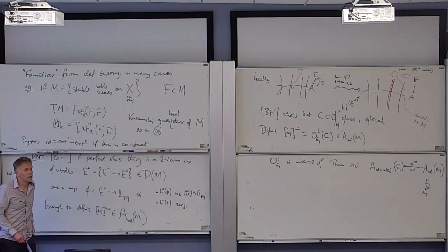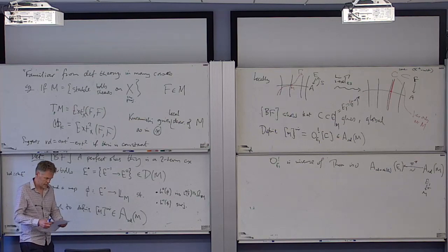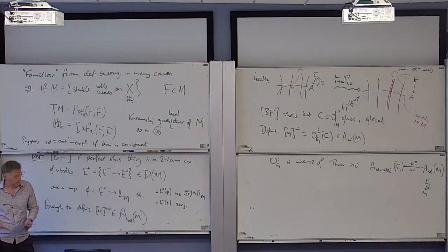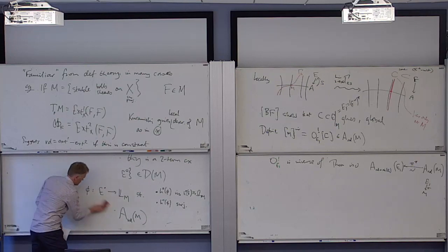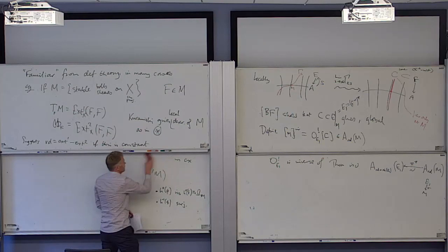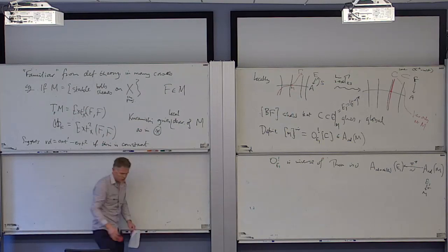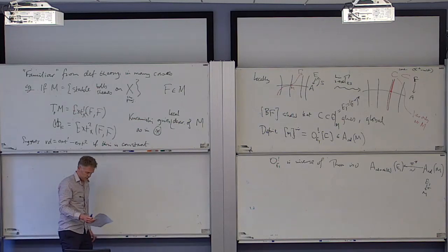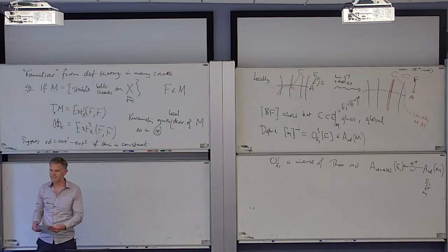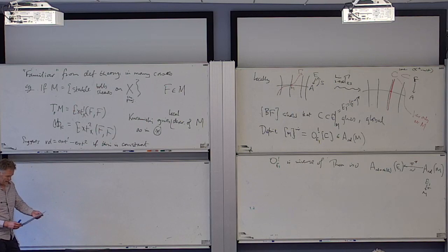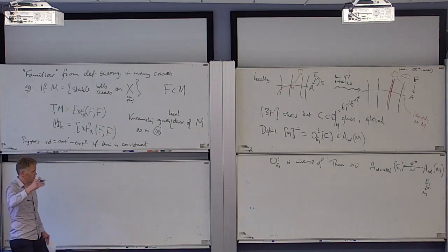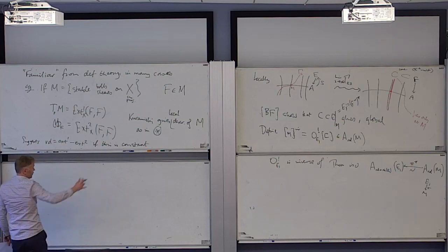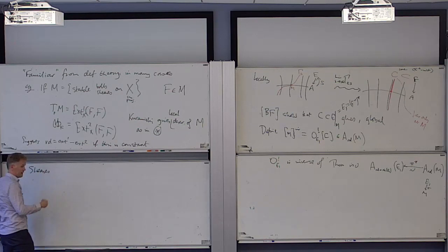This works for many many problems — all the enumerative algebraic geometry problems you've heard of, like Gromov-Witten theory, are all underpinned by this technology. What it doesn't work for is sheaves on Calabi-Yau four-folds. So now I give the part of my talk for the M-cubed conference.